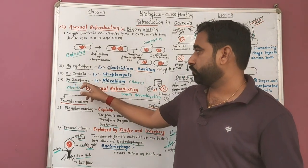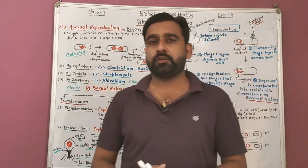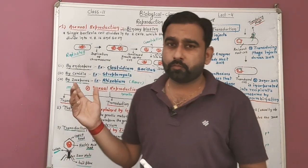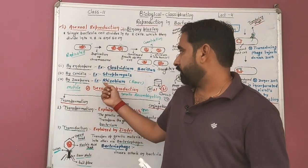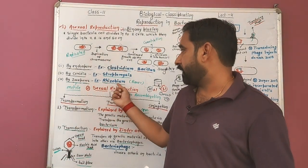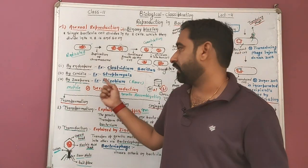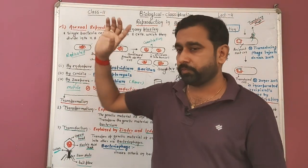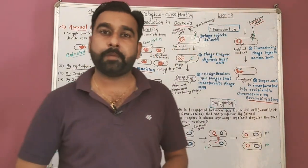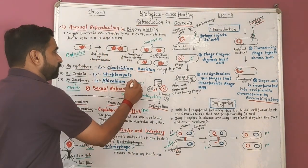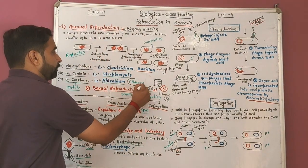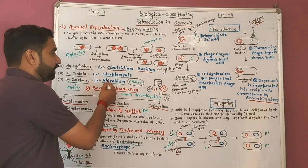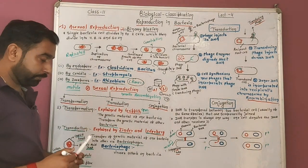Next is reproduction by zoospore. Zoospores are motile — as you studied in algae, they are motile spores. The example is Rhizobium. This is actually a sexual reproduction found in bacteria, and it is very rare — observed only in Rhizobium.